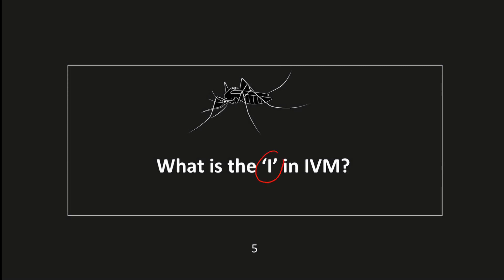What is the 'I' in Integrated Vector Management? The term 'Integrated' can stand for several things. First, the integration can refer to the integration of tools used for disease control — that is, chemical and non-chemical methods are used in combination wherever possible. Another example is vector control tools that attack adults, larvae and immature vectors, used in combination wherever possible.